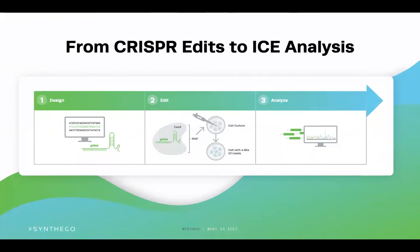CRISPR has created a new way to understand functional genomics by manipulating our nucleic acid makeup. Over the years, CRISPR applications to research have been incorporated into many scientific fields to understand heart development, cancer growth, neurological diseases, and even crop production in agriculture settings. In this workflow, you can see three main steps of what a general CRISPR experiment looks like.